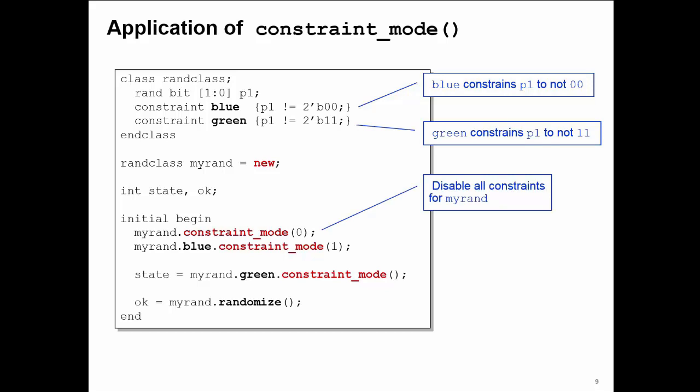Pass the value 0 and this disables all the constraints for myrand. I can apply the constraint_mode task to individual constraints. Here I call it off the blue constraint of myrand, and I set the value 1 for the switch for blue, which re-enables the blue constraint.